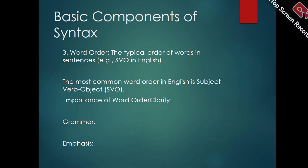Word order: the typical order of words in sentences. Word order refers to the arrangement of words in a sentence to convey a clear and precise meaning. Different languages follow different patterns for word order, but in English the typical order is quite consistent. The most common word order in English is subject-verb-object (SVO). Word order helps ensure clarity and is crucial for grammar. Deviating from the standard order can lead to confusion. Word order can also be adjusted for emphasis, for example: 'That book, I need to read.'